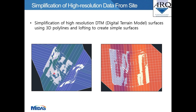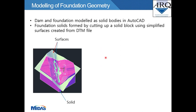Two more examples of DTM surface simplification are shown. In both cases, gray high-resolution surfaces were simplified by AOQ in AutoCAD into blue and red surfaces, using 3D polylines and lofting between these polylines to create the simplified surfaces.